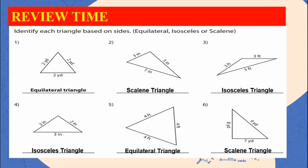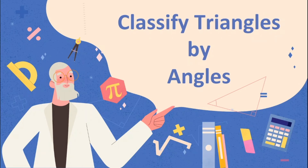Once again, these are the classification of triangles according to its sides. We have equilateral, isosceles, and scalene. And for today's lesson, it's still all about triangles, and we will identify its classification according to its angles. Are you excited? Let's start.